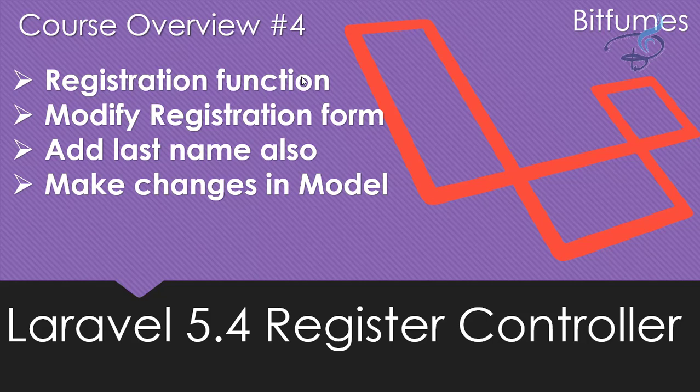After that we will see the register controller. Just as we understood the login controller, we will understand the register controller and see how the register function works. Then comes the crucial part — we will change the registration form by adding a last name field. We will make changes in the model so we can get the new field, and we will also add the last name column inside the user table in the database.